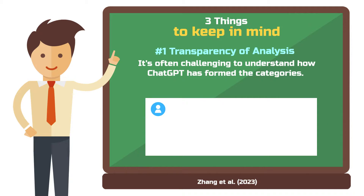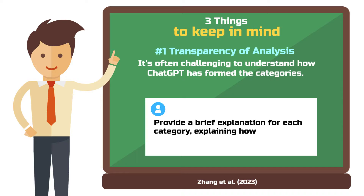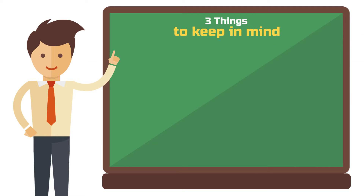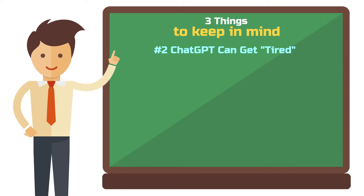Another recommendation is to include: "Provide a brief explanation for each category explaining how you arrived at the category." ChatGPT will then describe how the categories relate to the data, making it easier for you to understand how the categories were generated.